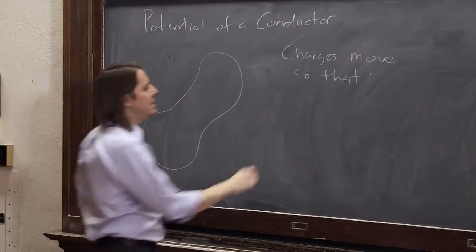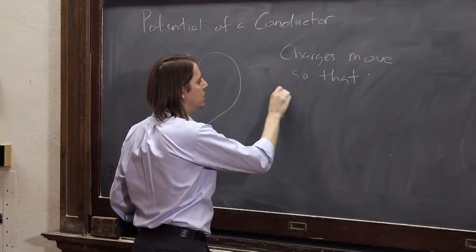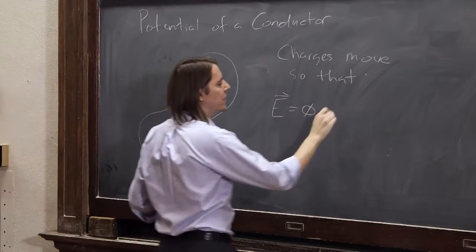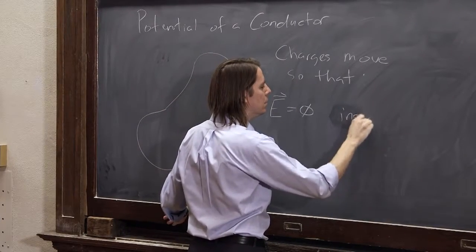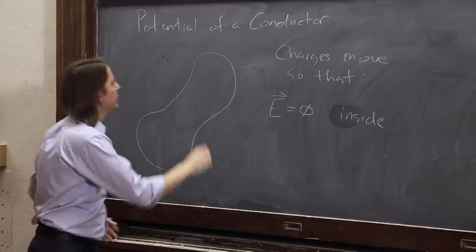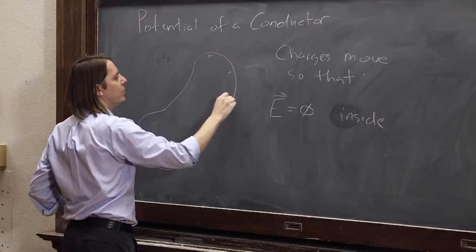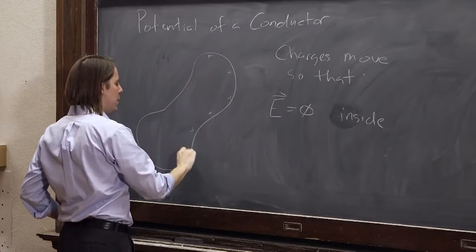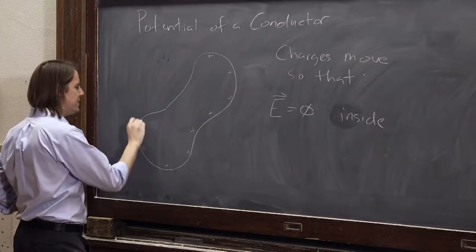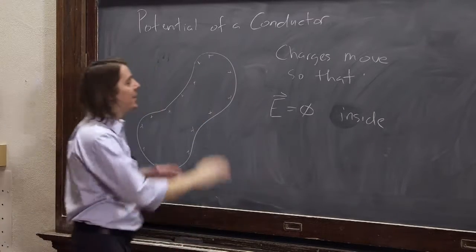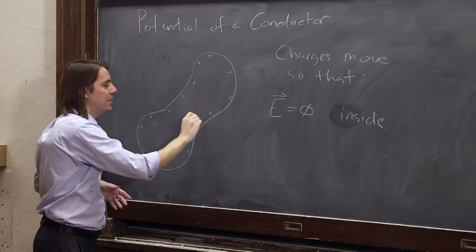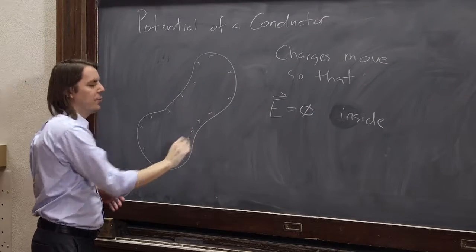Basically, they'll move so that E field equals zero inside the conductor. So the charges will build up on the surface in whatever arrangement they need, whatever density of surface charge is necessary to make E equal zero. It might not even be constant.